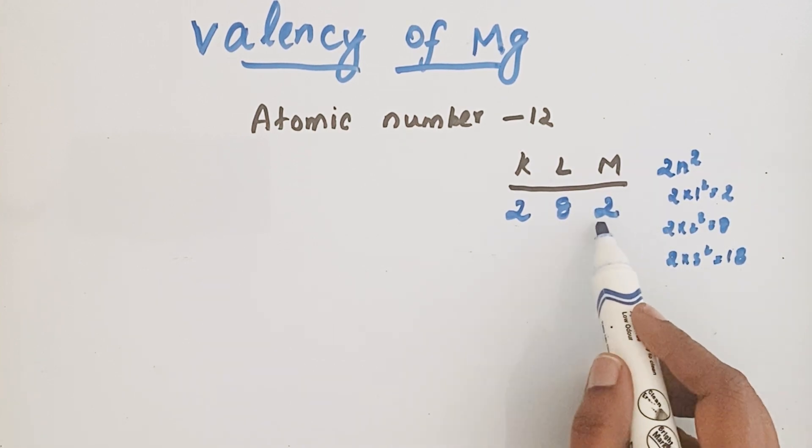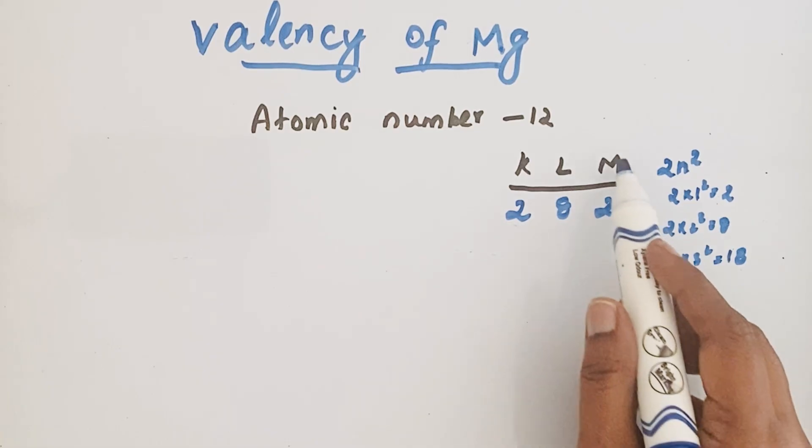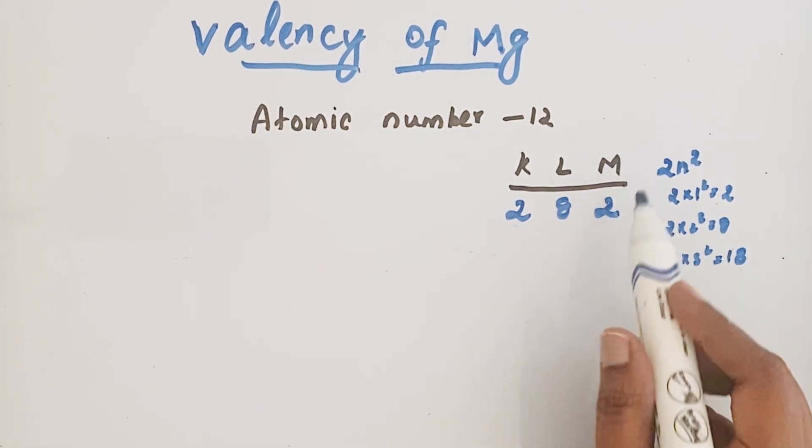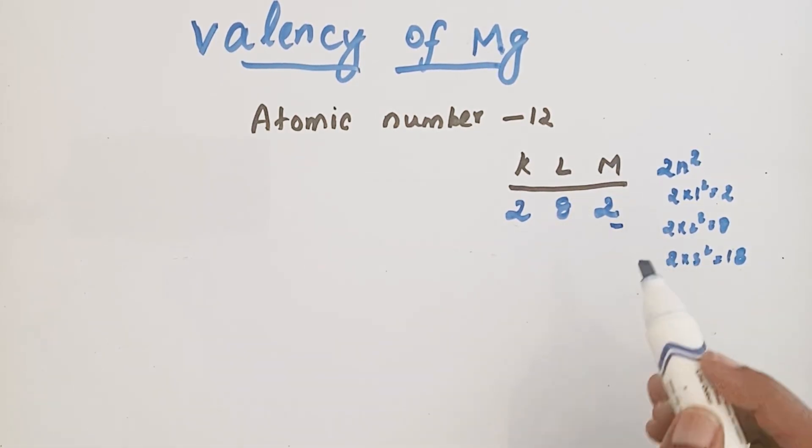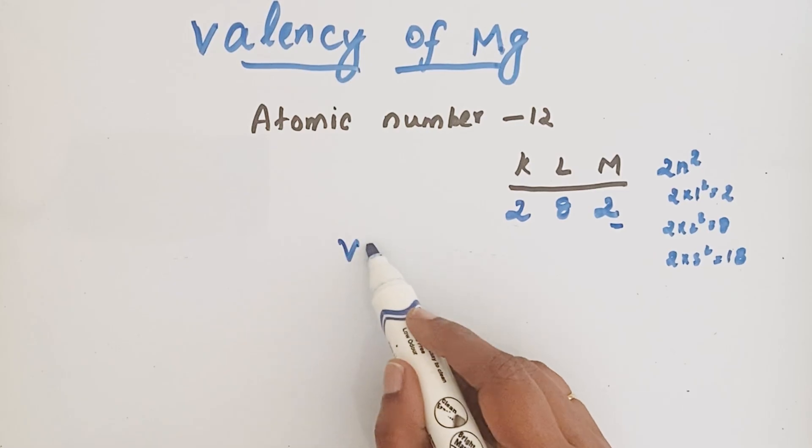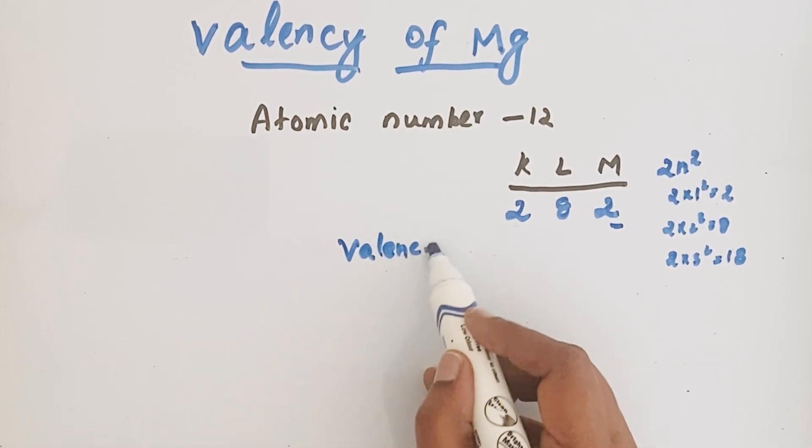Which is present in the outer shell we call valence electrons. So here M shell is the outer shell. So these two electrons are valence electrons. So the valence electrons of magnesium is 2.